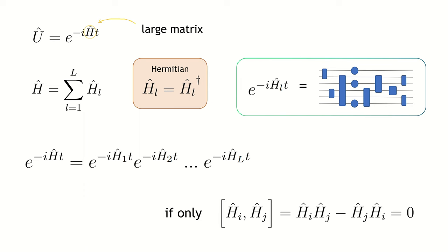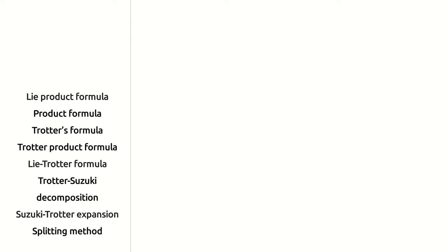In the general case, when local terms do not commute between each other, trotterization comes to the aid. The Trotter product formula gives a limit when exponentiation is possible even for non-commuting parts. This formula has a long history and, when applied to the problem of Hamiltonian simulation, appears in the literature under many different names, which are listed on the left side of the screen.